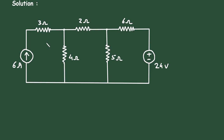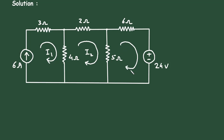First of all, let's assume this is mesh number 1 with current I1, mesh number 2 with current I2, and mesh 3 with current I3. Now here we can clearly see I1 is equal to 6 ampere.